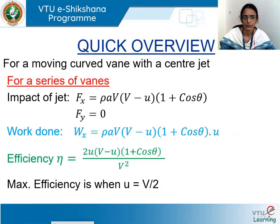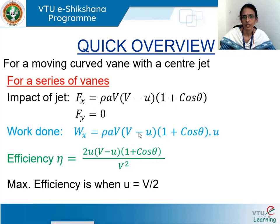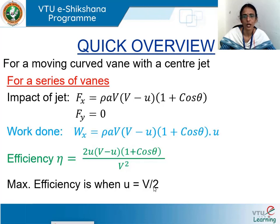Next we have moved on to the case when there are a series of curved vanes mounted on a wheel. In that case, the impact of jet is given by f_x equal to rho a v into v minus u into 1 plus cos theta. The corresponding work done is f_x into u, and the efficiency is given by 2u into v minus u into 1 plus cos theta divided by v squared. We have seen the condition for maximum efficiency, that is when the tangential velocity of the wheel u is equal to half of the jet velocity, that is v by 2.